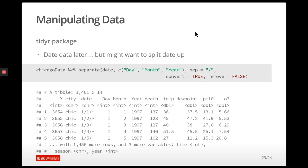There's also a unite function that takes those separate columns and combines them back into one column if needed.